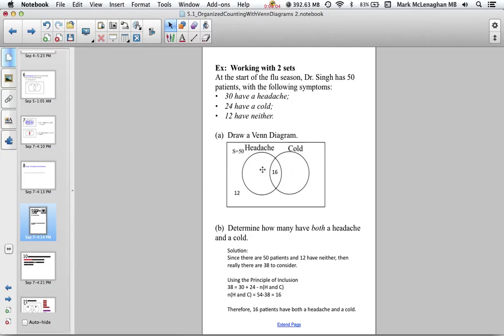Now that we know, we take our 30. 30 minus 16 is 14. 24 minus 16 is 8. So we can finish off our Venn diagram. Here's the intersection, people that just have a headache, and people that just have a cold.